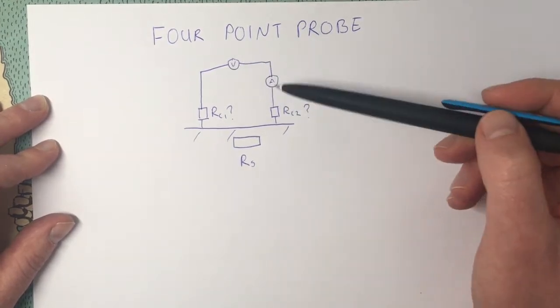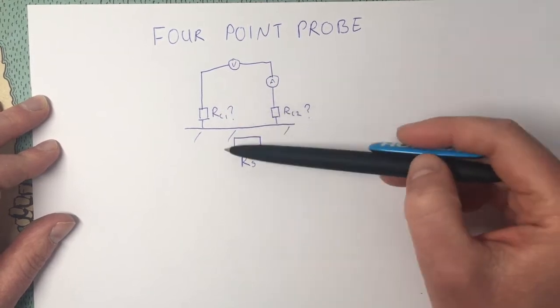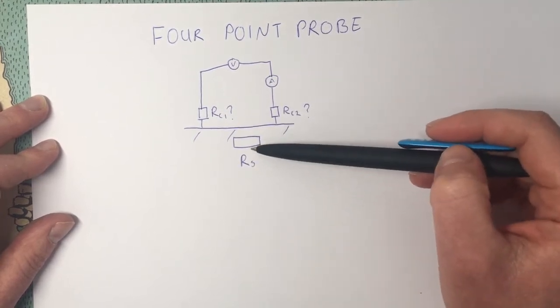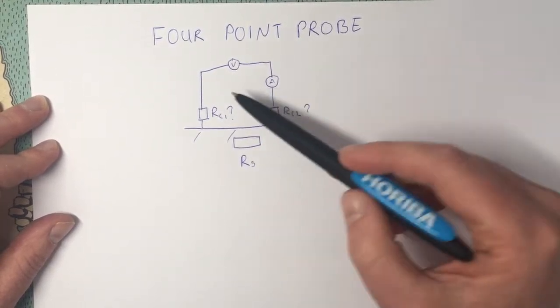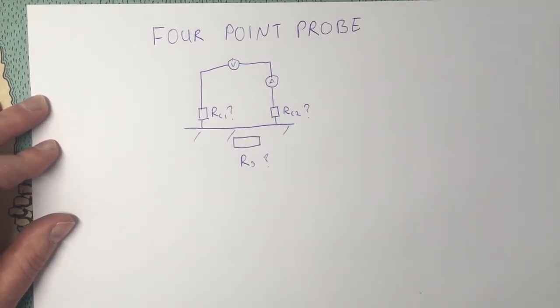Now the multimeter is measuring the resistance of all of these. It's measuring the two contact resistances and the sample resistance, which is what we want to know. So if we don't know these resistances, we don't know the sample resistance.